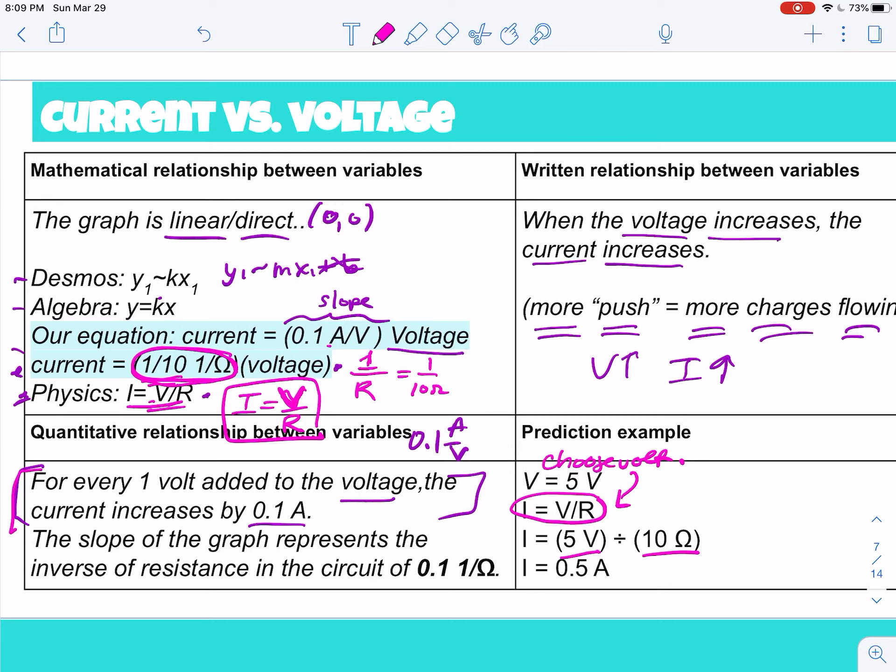More voltage added by one volt, current increases by 0.1. And then the slope actually is the inverse of resistance, okay? Which is a little bit confusing. It's basically like one over 10 ohms, okay? Which is a touch confusing, okay? I think I'm gonna do the CER.